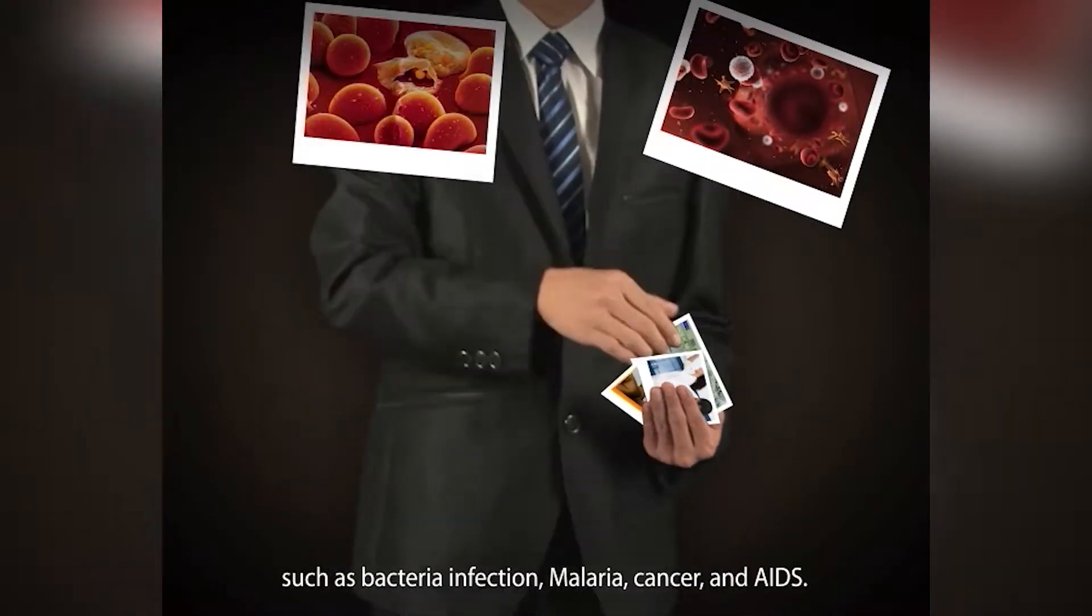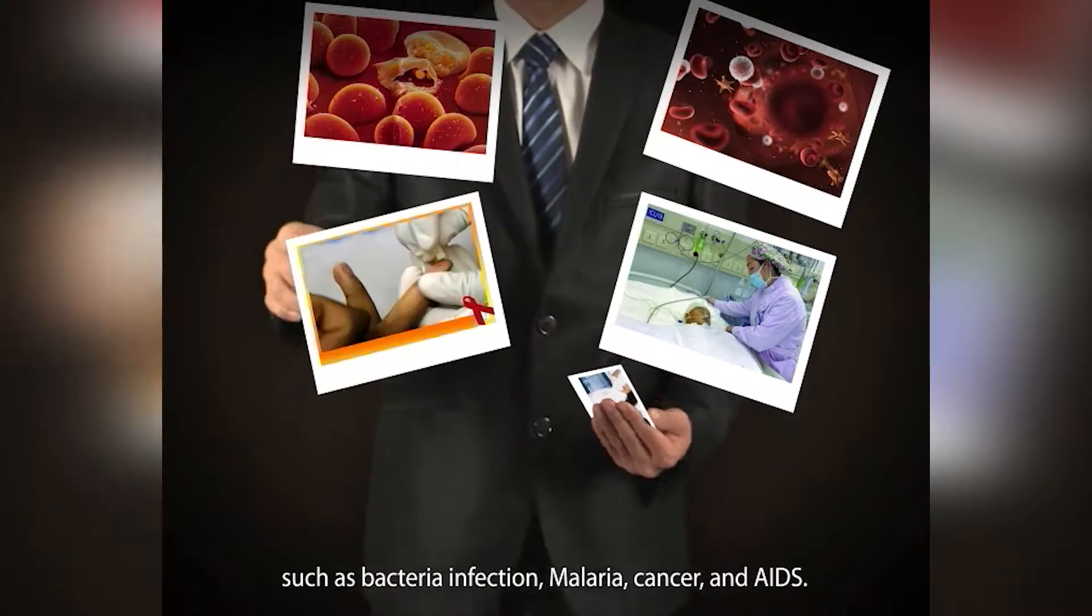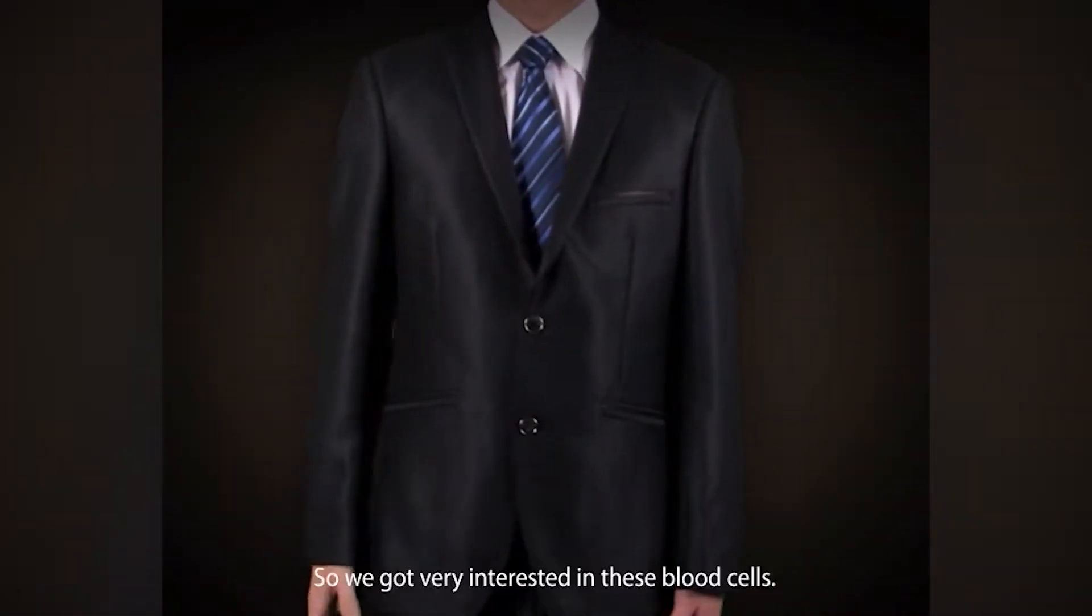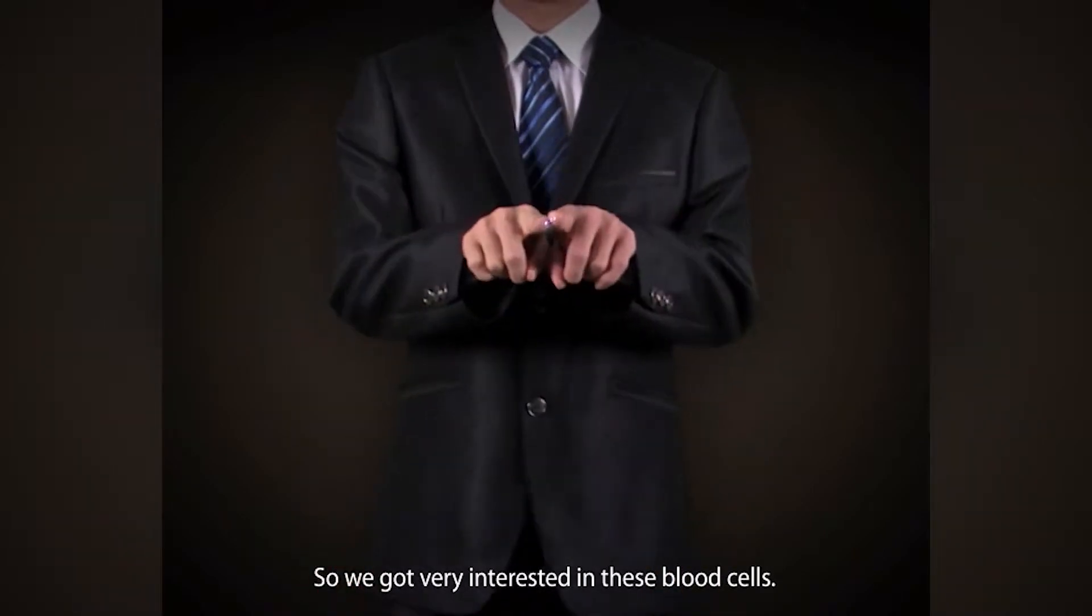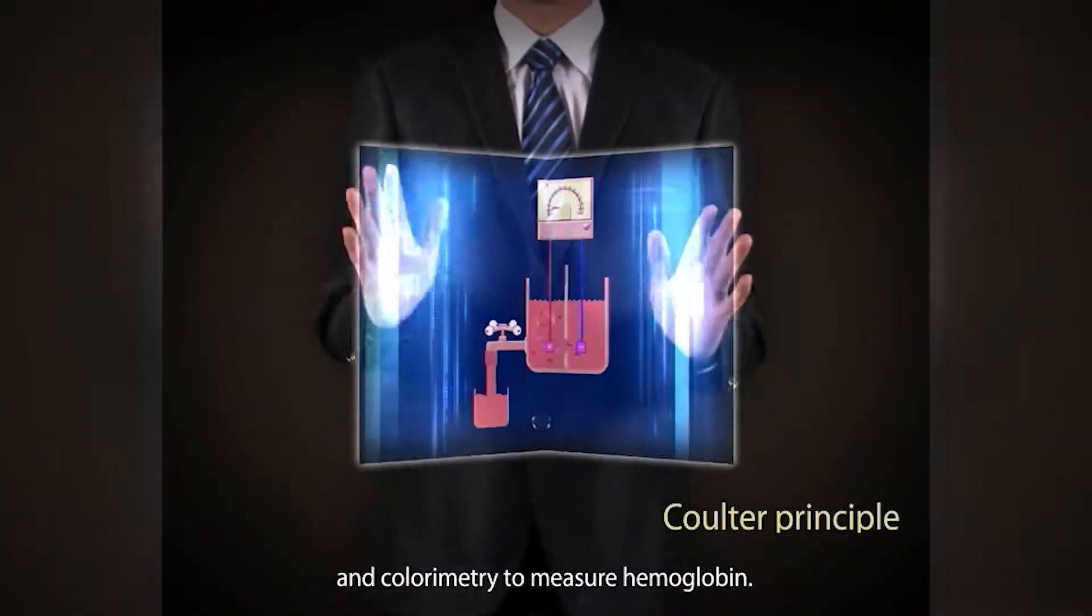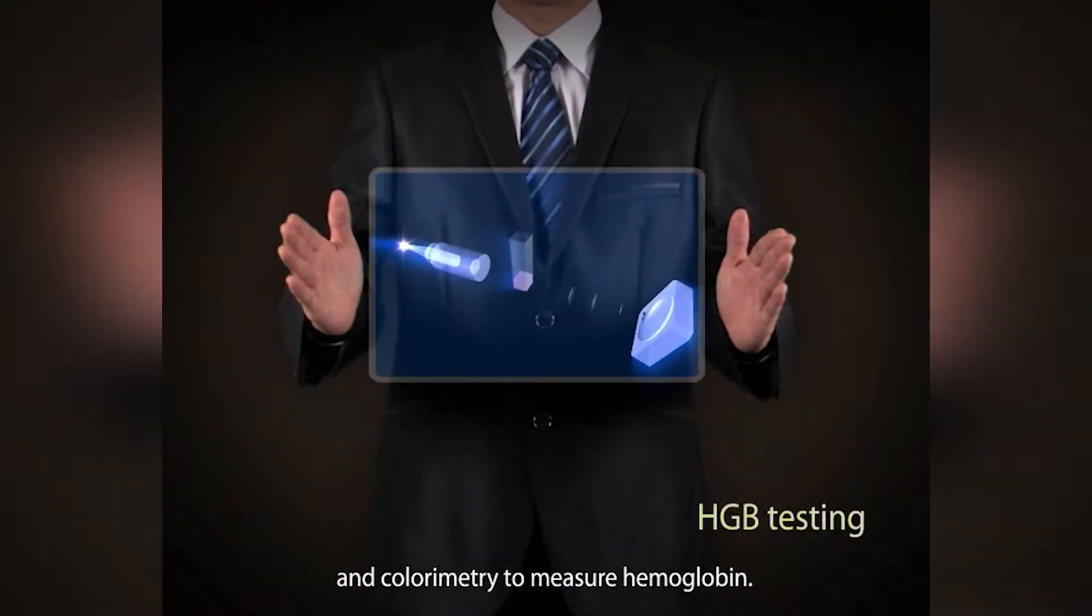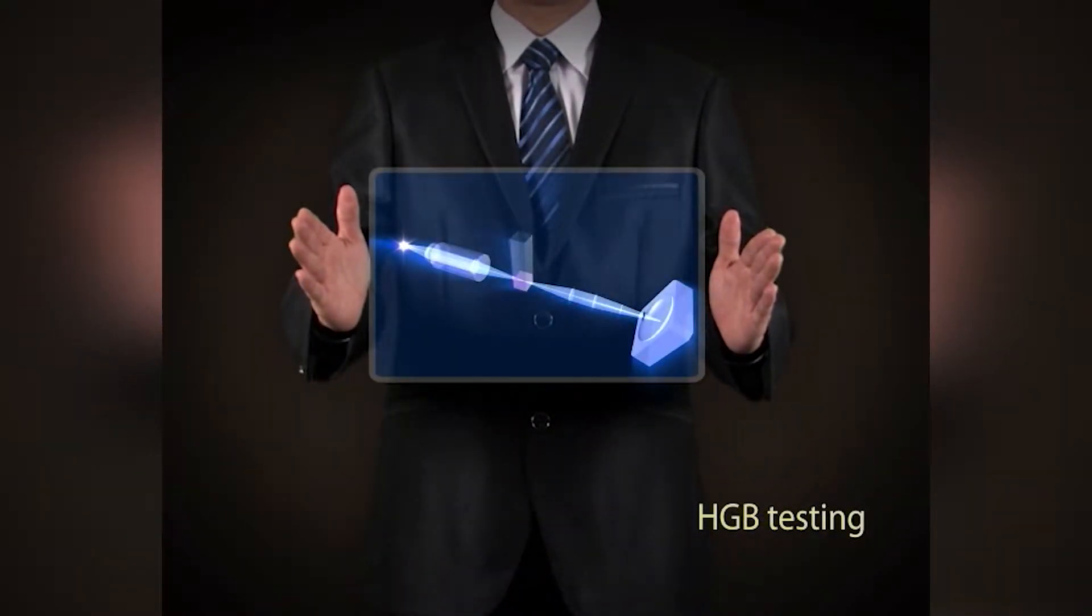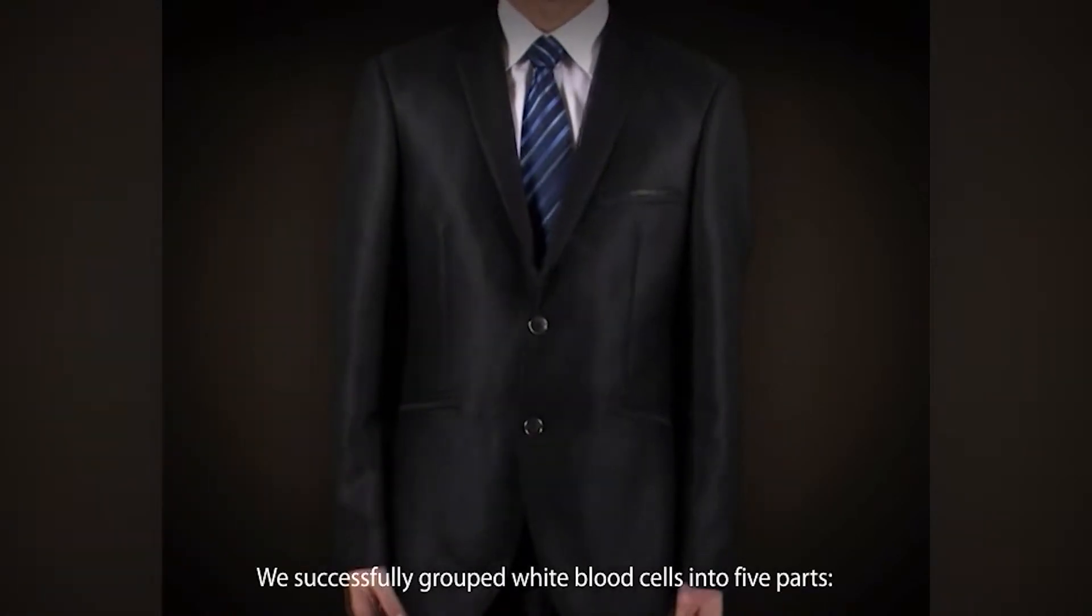Then we discovered surprising links between them and many diseases, such as bacteria infection, malaria, cancer, and AIDS. So we got very interested in these blood cells. We implemented the culture principle to count cell number and colorimetry to measure hemoglobin.